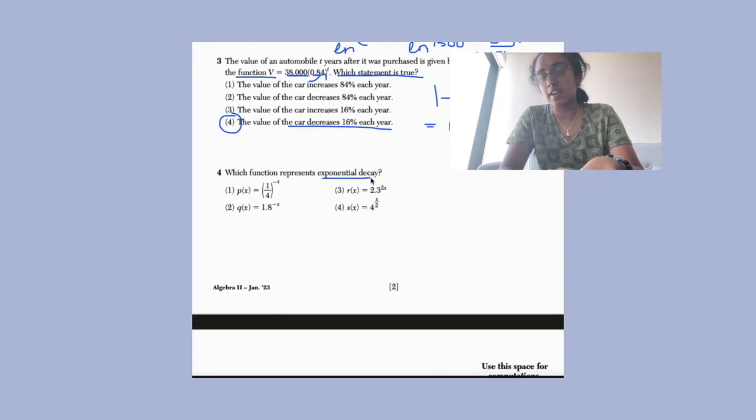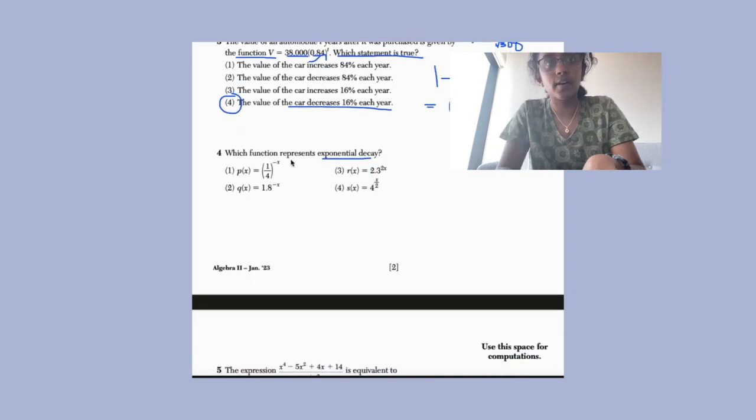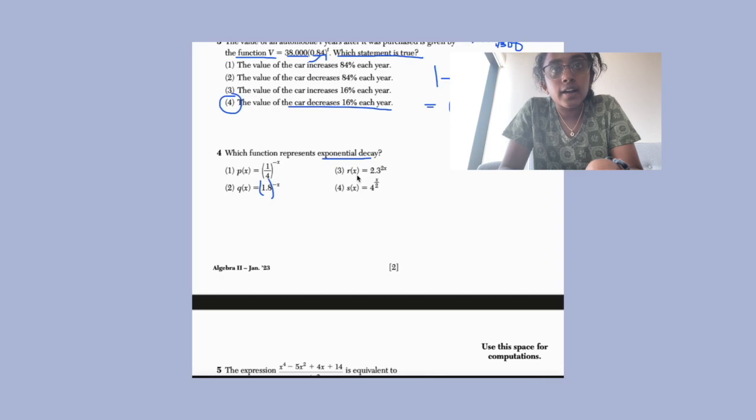And as we were talking about right here, we would use the same kind of thing to answer number four. Like what is inside the parentheses here or whatever we're multiplying by the exponent has to be less than one. Yeah, this is 2.3. This is four. This is 1.8. The answer is one for this.